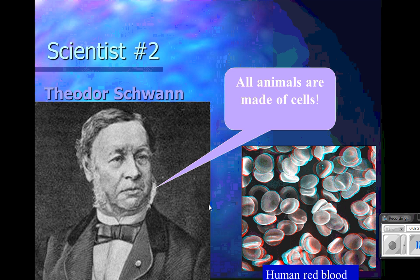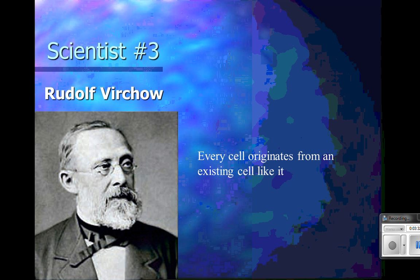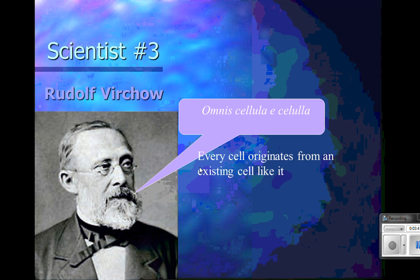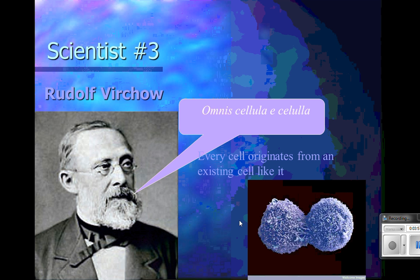Here is the microscopic image of a human red blood cell. Finally, Rudolf Virchow determined that every cell originates from an existing cell like it. The Latin for that is 'omnis cellula e cellula' — cell is from cell. All cells come from cells.